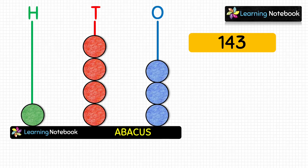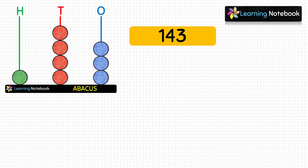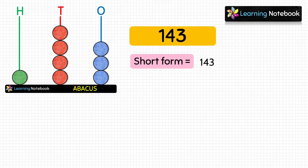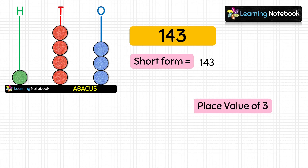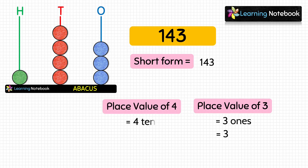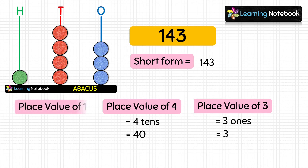In this way we have represented the three-digit number 143 on the abacus — 143 is also called the short form. Now let's find the place value of each digit. Starting from ones place: place value of 3 is three ones, or 3. Place value of 4 is four tens, or 40. Place value of 1 is one hundred, or 100.